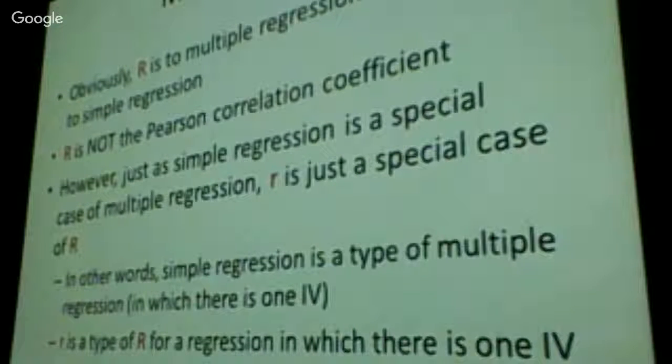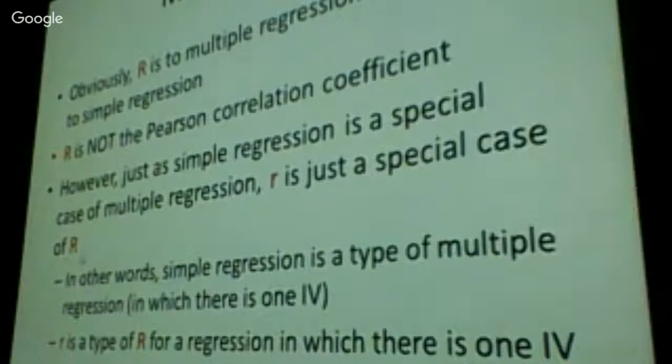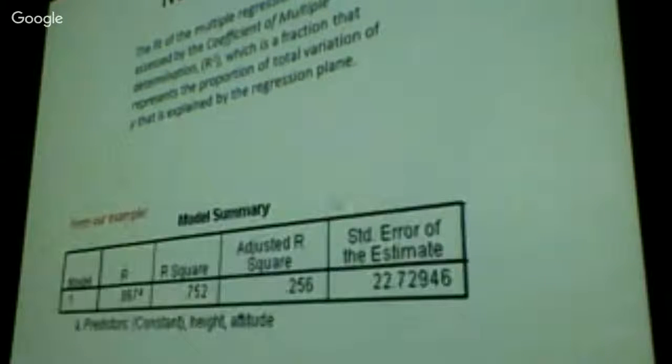So big R is general relativity. Small r is stepping on the gas and going faster. I've not confused you more than I should have done that. Forget all that stuff. Today, by the way, is the 100th anniversary of the discovery of general relativity. Yay, science. How we assess the goodness of fit of a multiple regression is by assessing the coefficient of multiple determination, or r squared.